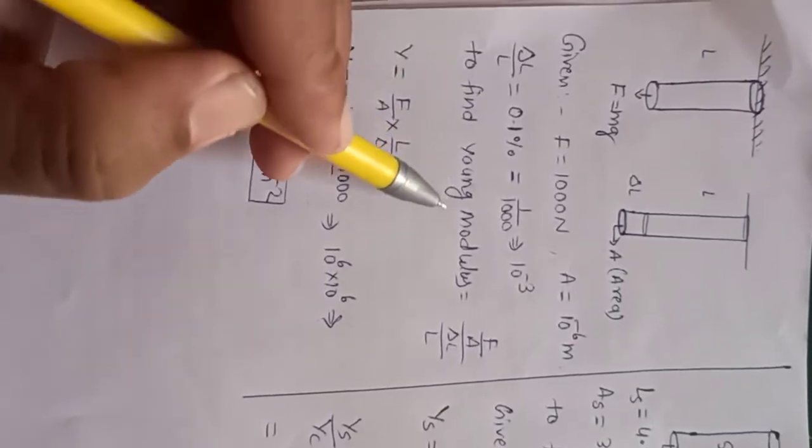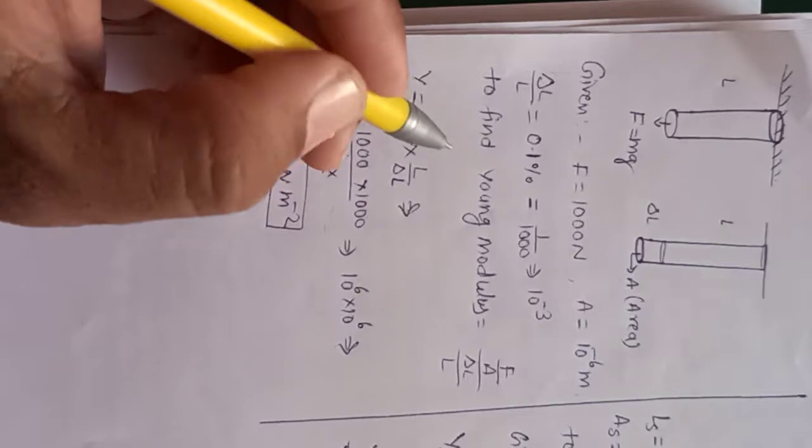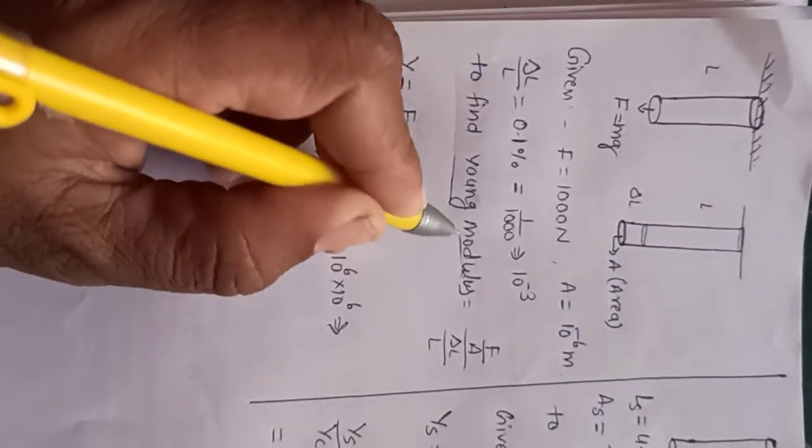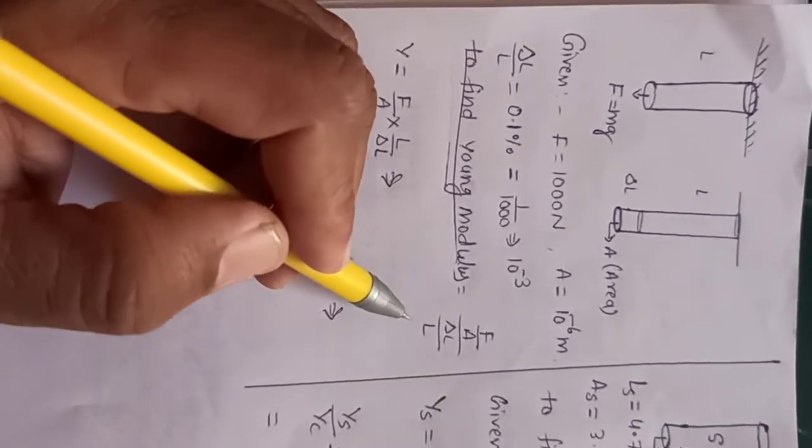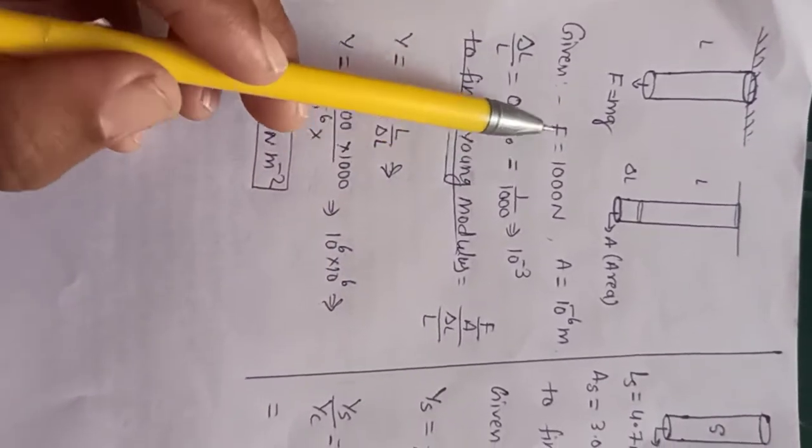We have to find Young's modulus. This is the formula of Young's modulus: if we divide F/A by ΔL/L, all the data is given.